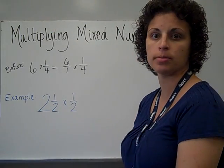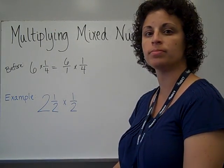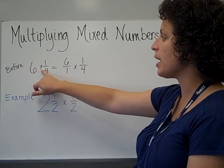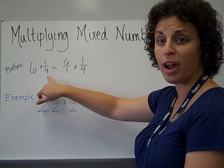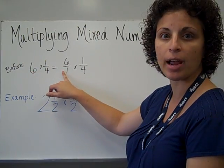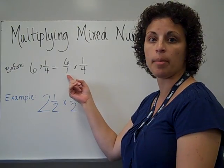Multiplying mixed numbers. We've done something similar before when we multiplied a whole number times a regular fraction. We had to turn this whole number into an improper fraction by putting it over a denominator of 1.